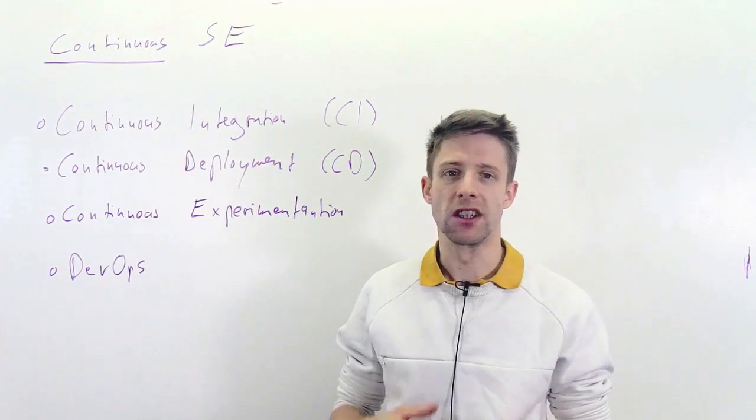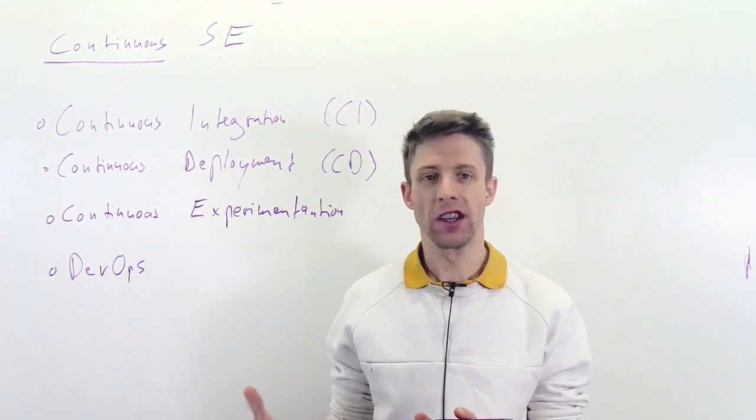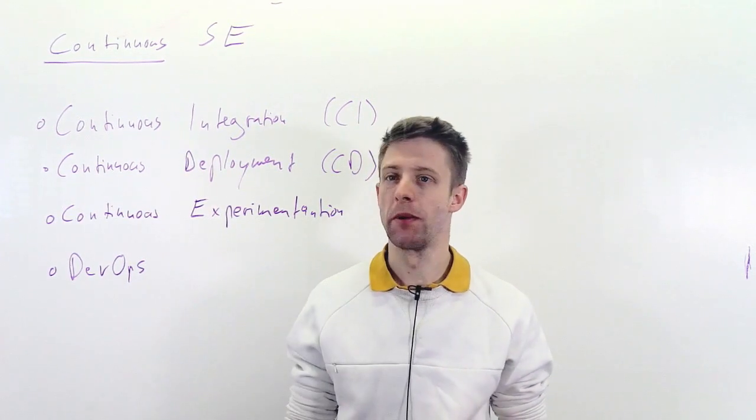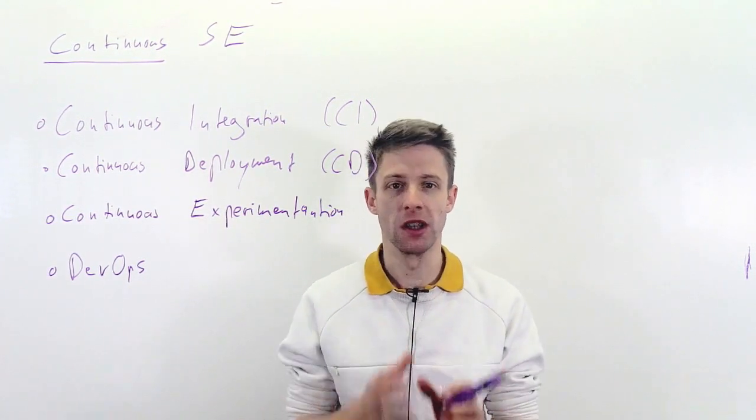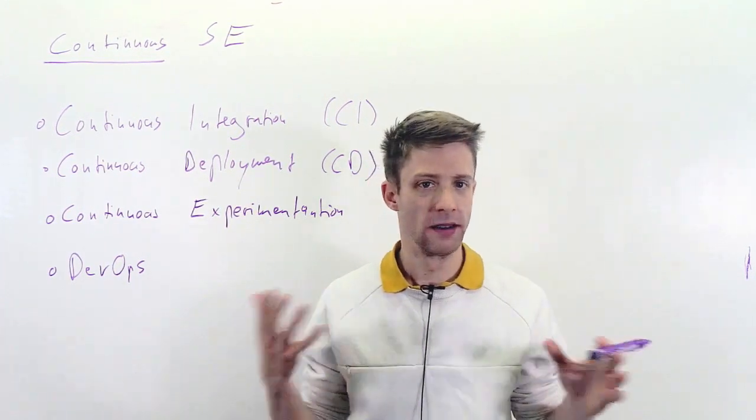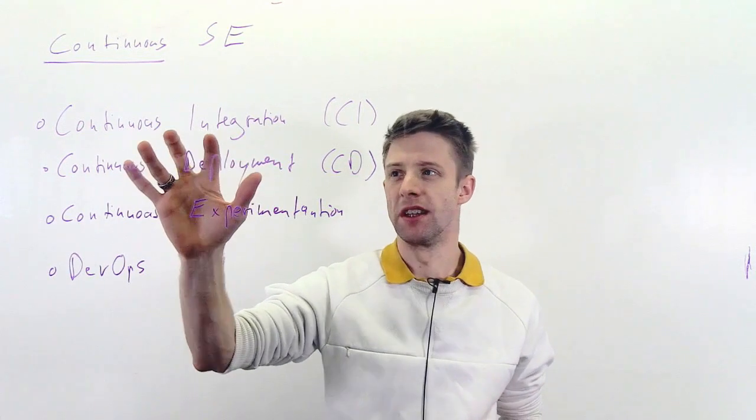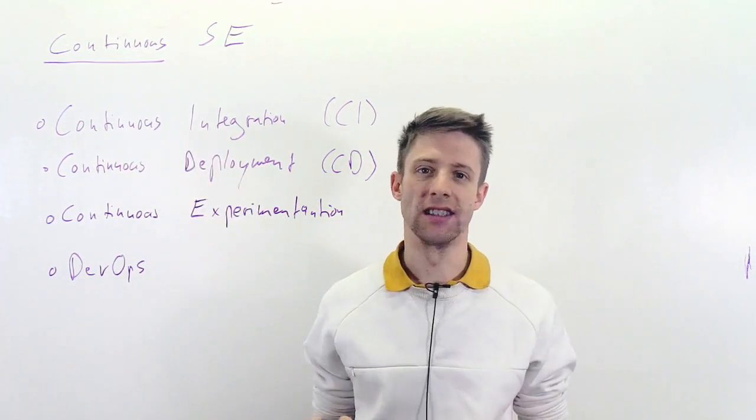So continuous integration is essentially the practice of integrating, of pushing your code to a central repository like a Git repository, build it, test it automatically and do that on a frequent basis, several times daily or every day, so that you have always a ready tested version.